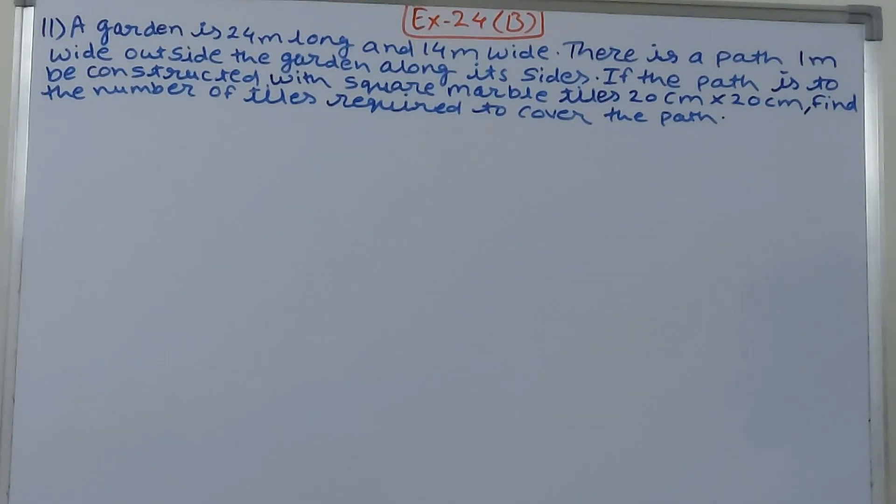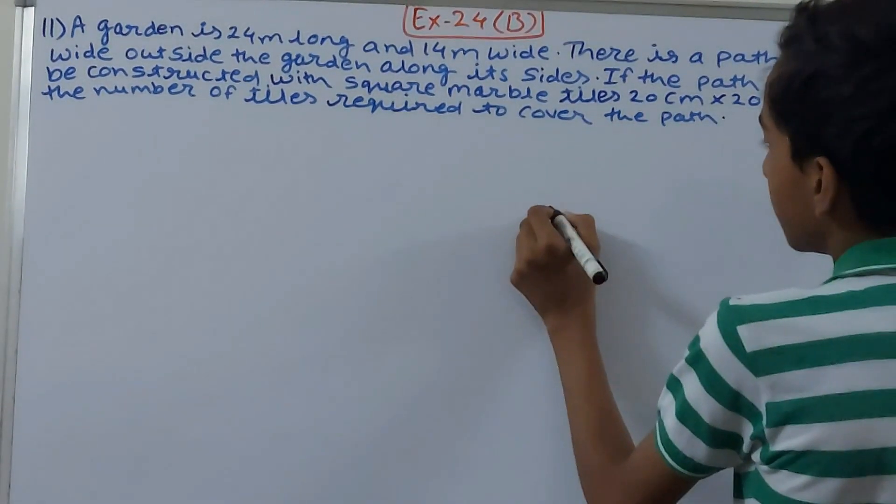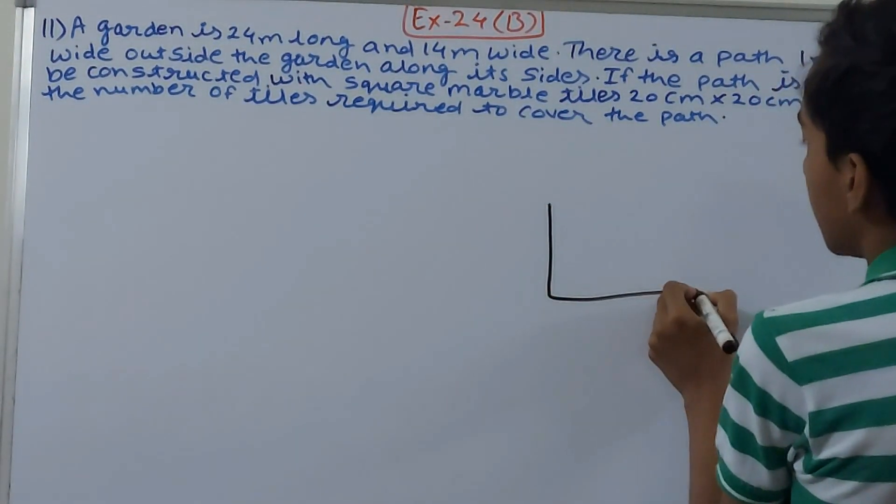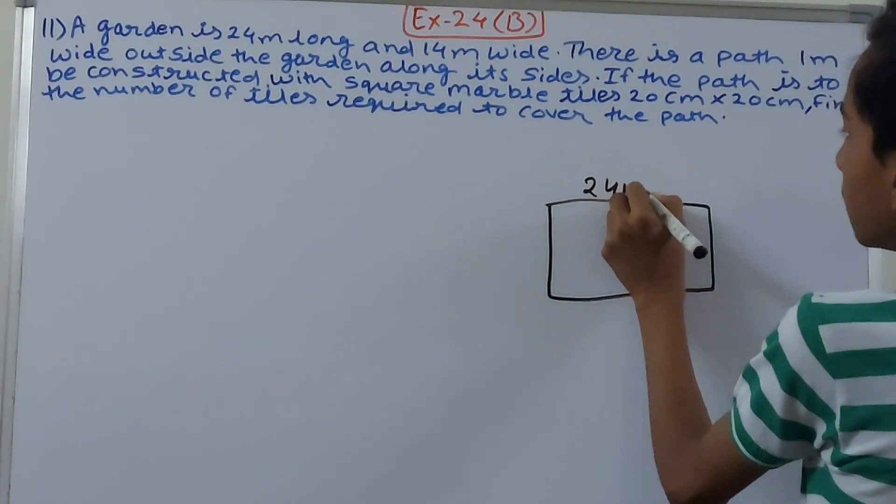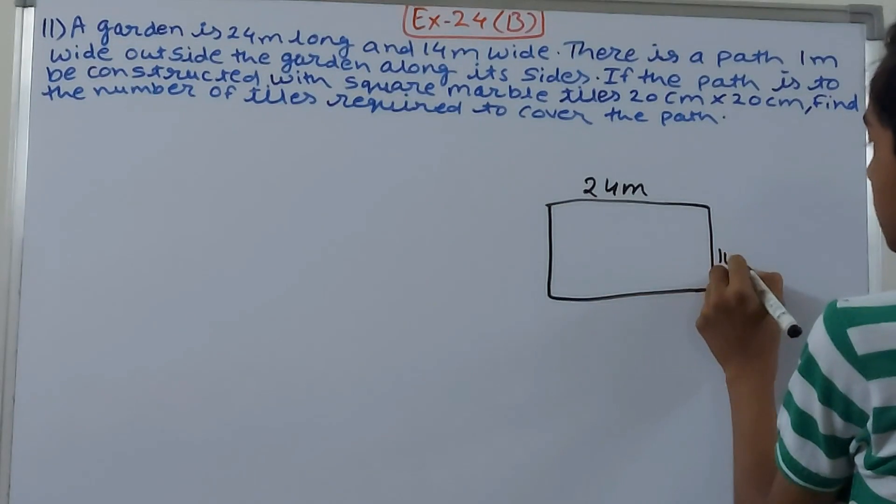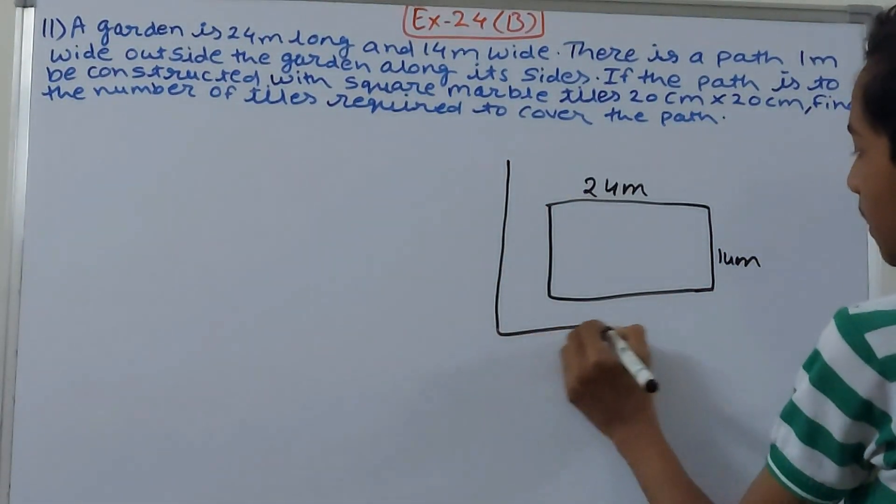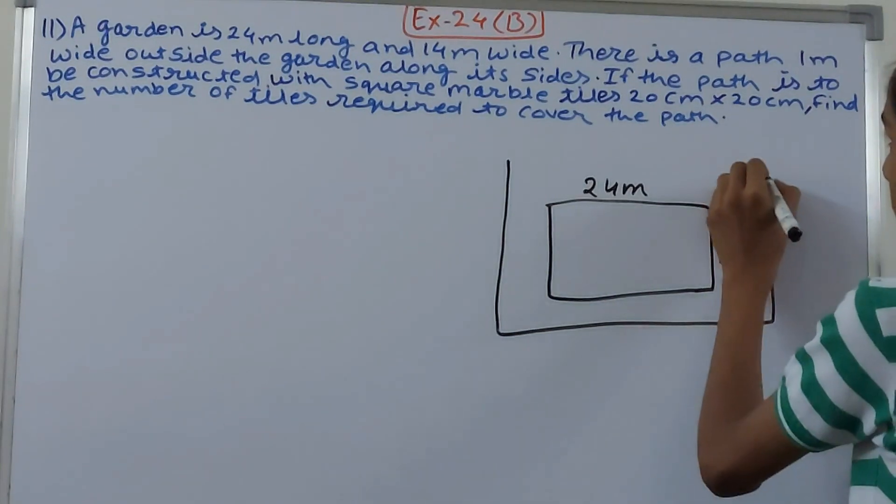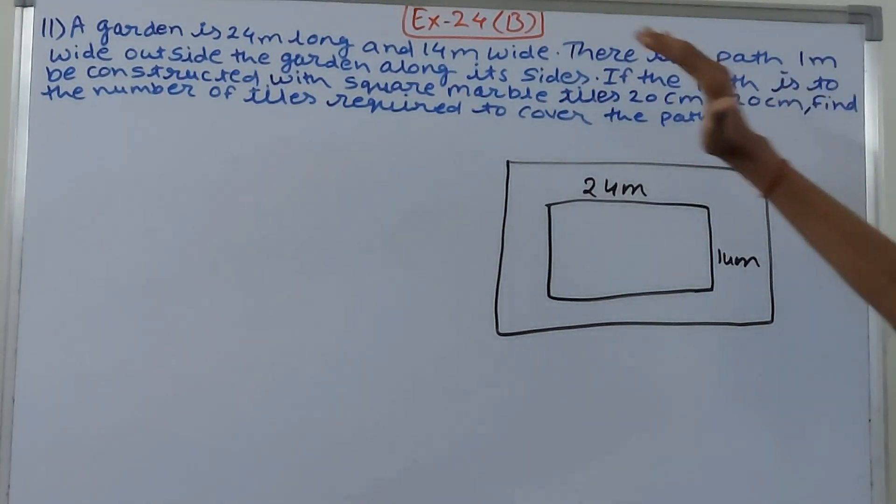Now basically what it means is that suppose I have a garden - the garden is rectangular in shape, 24 meters by 14 meters. Around the garden we are going to make a path outside of it.